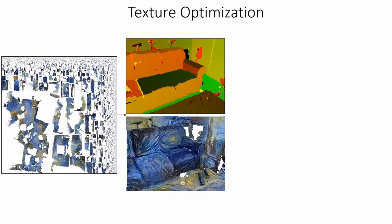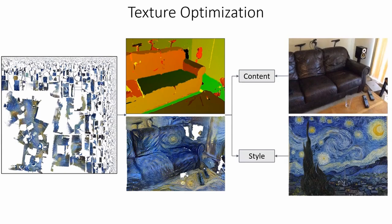We optimize a texture by sampling it with a UV map for each view. Then we compare the rendered image in 2D content and style losses. Backpropagation to the texture space allows us to optimize a complete texture. There are two problems with this naive approach.